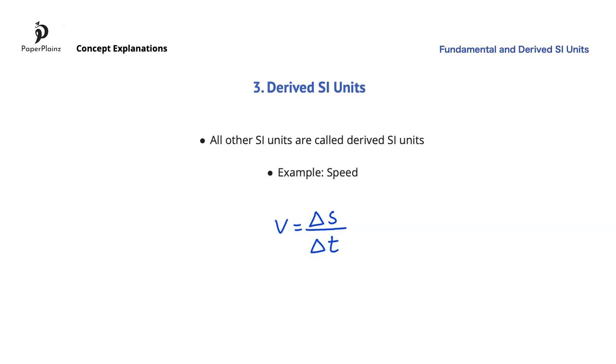The small triangle that you see in front of S and T is the Greek letter delta and means change. Distance is in meters, which is a fundamental SI unit. Time is in seconds, which is also a fundamental SI unit. So speed will be in meters per second, which in physics we usually write as m S to the power of negative one. You probably remember from math that the power of negative one basically means division, so S to the power of negative one means divided by S. This is why m S to the power of negative one stands for meters per second.